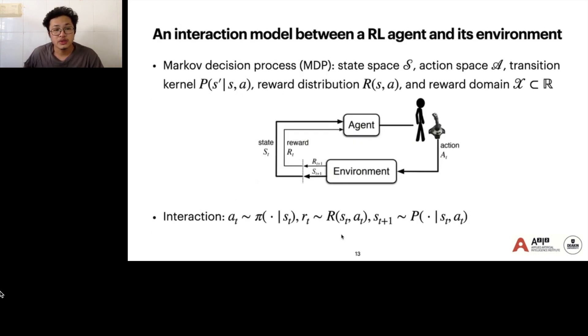The interaction model in reinforcement learning is described through the Markov decision process, MDP. We have the state space X, action space A, transition kernel P, reward distribution R, and reward domain. The interaction is as follows: at every time step, the action is drawn from the policy π and receives reward R. Then the system will move the agent to a new state according to the transition kernel P.